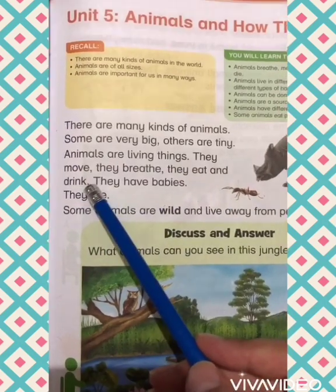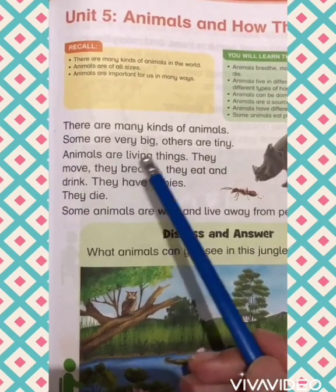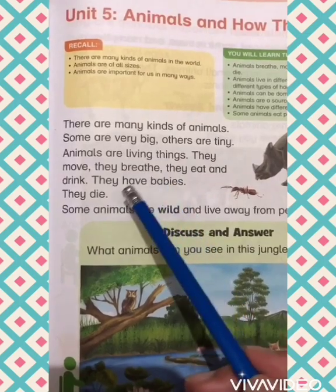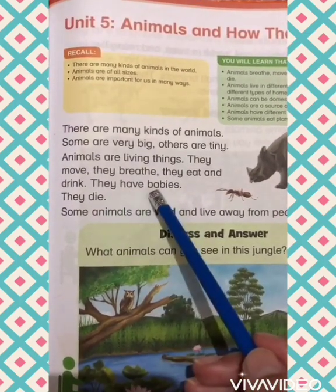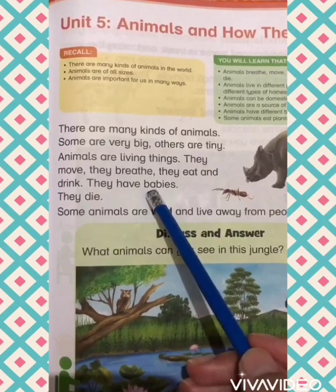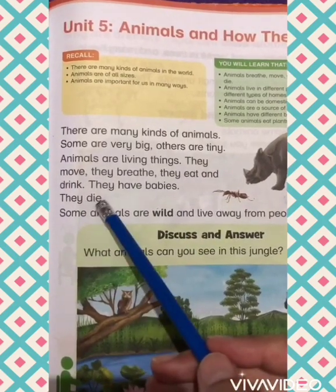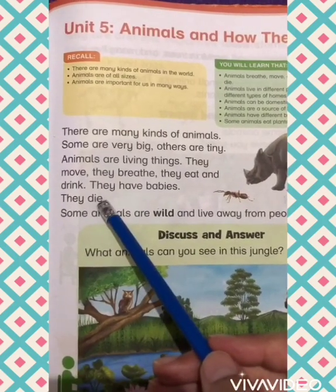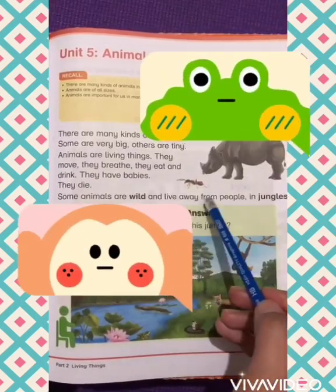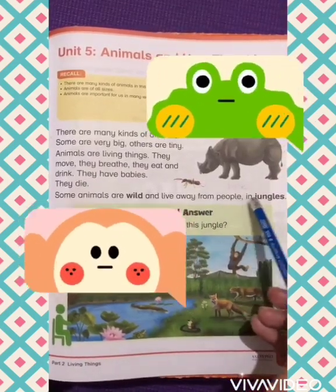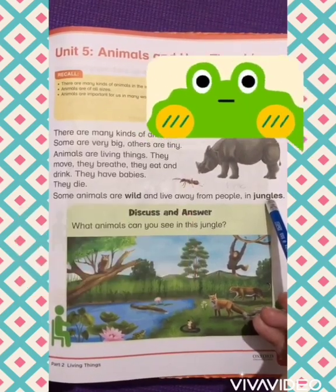Animals are living things just like human beings — they move, they breathe, they eat and drink. Animals need food, water, and oxygen in order to survive. They reproduce and have babies, and they can also die.